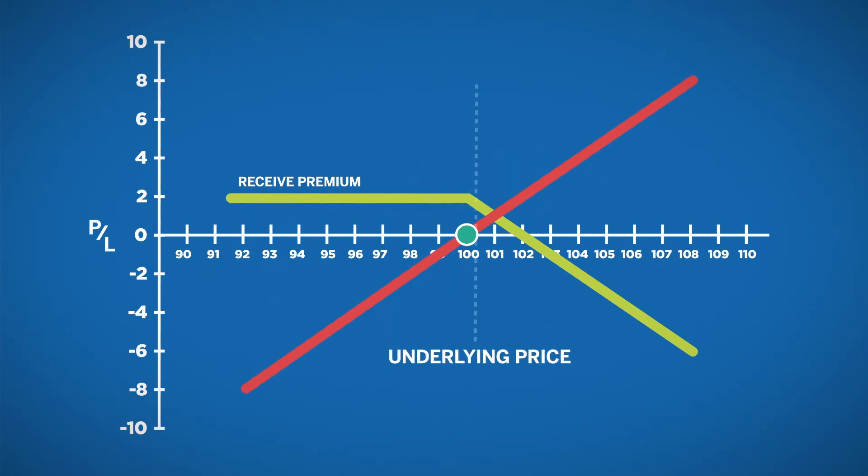Call option sellers have unlimited risk if the futures price continues to rise. Call sellers will profit as long as the futures price does not increase beyond the value of the premium received from the buyer. The break-even point is exactly the same for the call seller as it is for the call buyer.